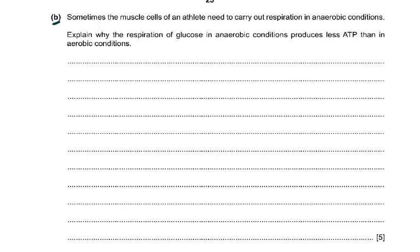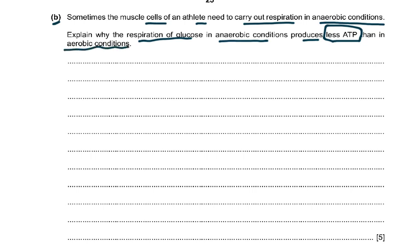Part B: sometimes muscle cells of an athlete need to carry out respiration in anaerobic conditions. Explain why respiration of glucose in anaerobic conditions produces less ATP than in aerobic conditions. It's only 2 ATP in anaerobic conditions while it is 38 ATP in aerobic conditions. Only glycolysis is taking place, which produces only two molecules of ATP via substrate-linked phosphorylation.